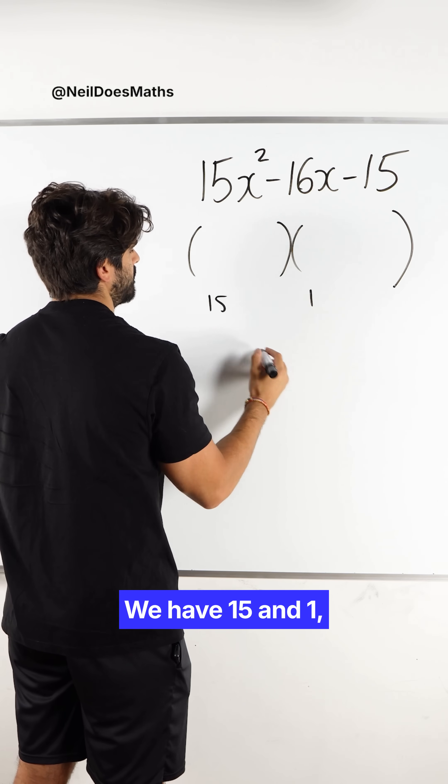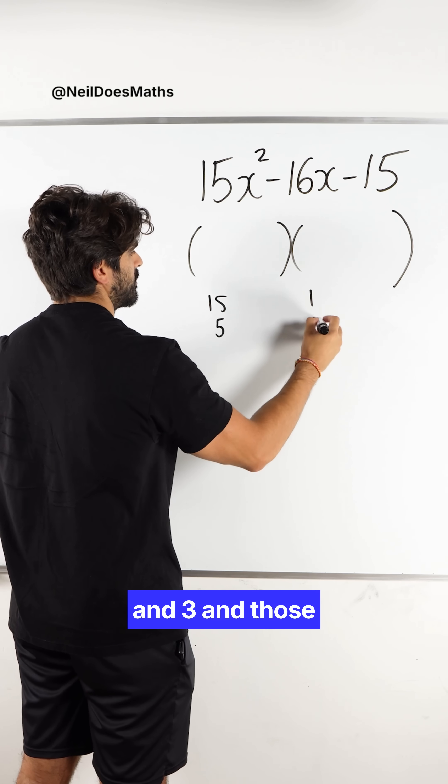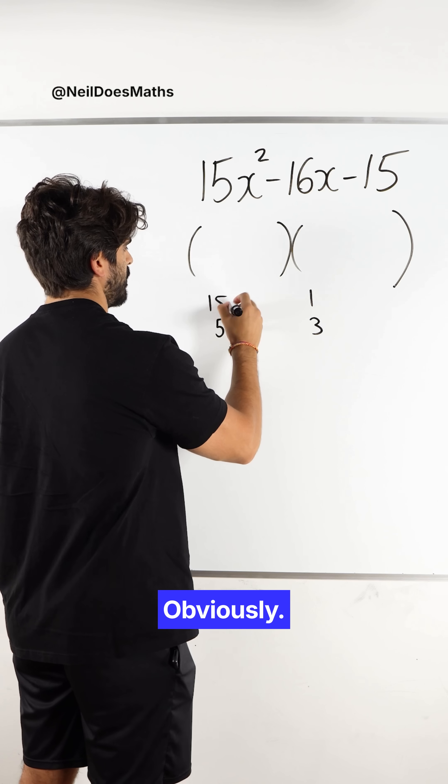We have 15 and 1, we have 5 and 3, and those are the only options. Obviously we need x and x.